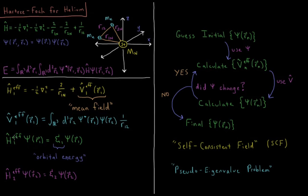Instead of being a pure eigenvalue equation, this is what we call a pseudo-eigenvalue equation — the pseudo-eigenvalue problem. To get around this, we use the self-consistent field procedure. Hartree-Fock is sometimes referred to as self-consistent field, or SCF. Other methods also use SCF, but most commonly when people talk about SCF they mean Hartree-Fock or density functional theory.